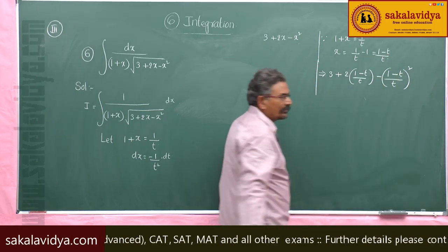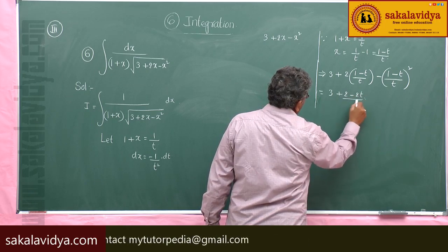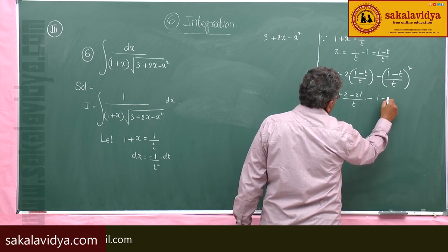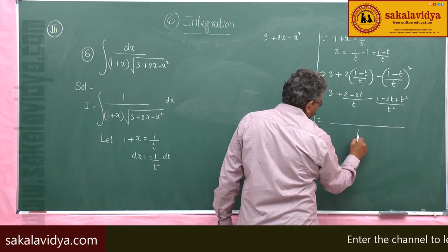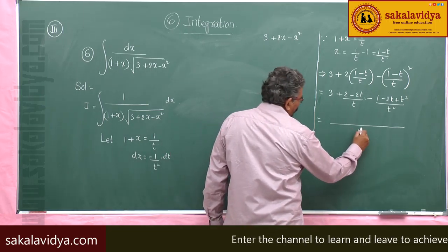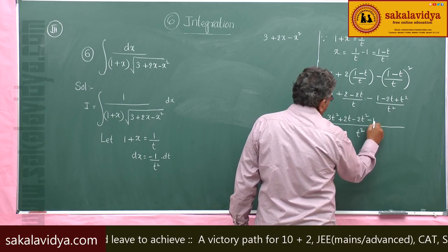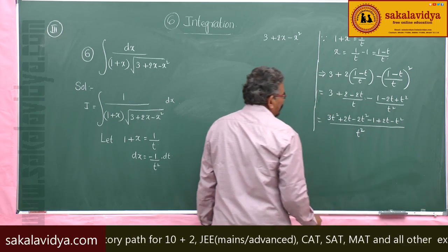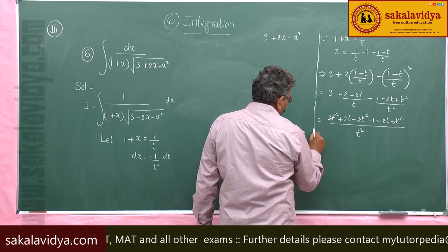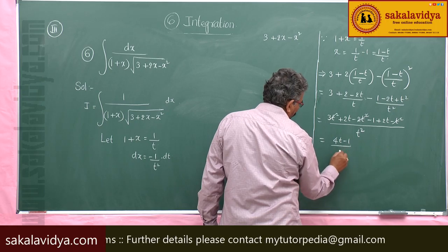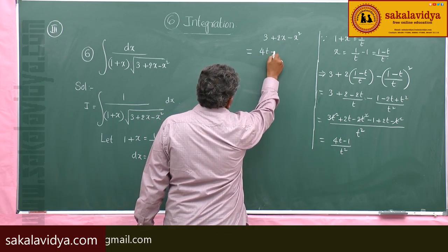Taking t squared as the LCM and expanding, we get 3t squared plus 2t minus 2t squared minus (1 minus 2t plus t squared), all over t squared. Simplifying: 3t squared minus 2t squared gives t squared, and after cancellation, this equals (4t minus 1) by t squared.